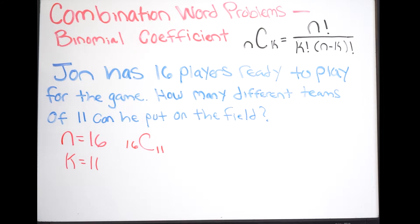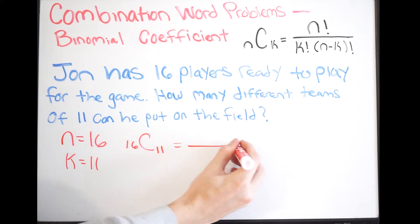And that's how we're going to solve this problem. So let's go ahead and set this up. I'm going to do equal to, so again n is going to be my 16 so I put 16 factorial. And then my k is going to be 11 so I put 11 factorial.